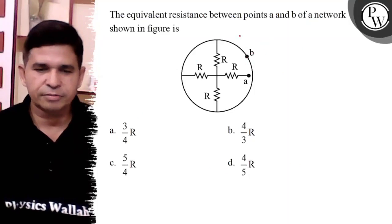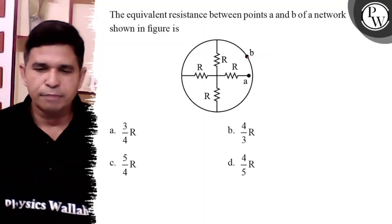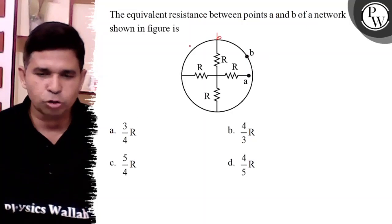Here at point B, if we have to determine the equivalent resistance between A and B, B is shorted. So this is also B, this is also B, and this is also B.